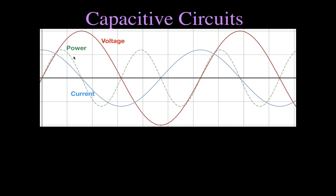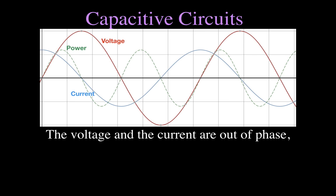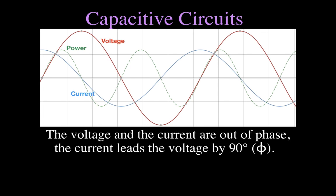One thing you should know about purely capacitive circuits — and that you should notice from this graph — is that the voltage and the current are out of phase. The peak voltage and peak current do not occur at the same point in the cycle. In fact, the current leads the voltage by 90 degrees. You can see that the peak current occurs before the peak voltage.